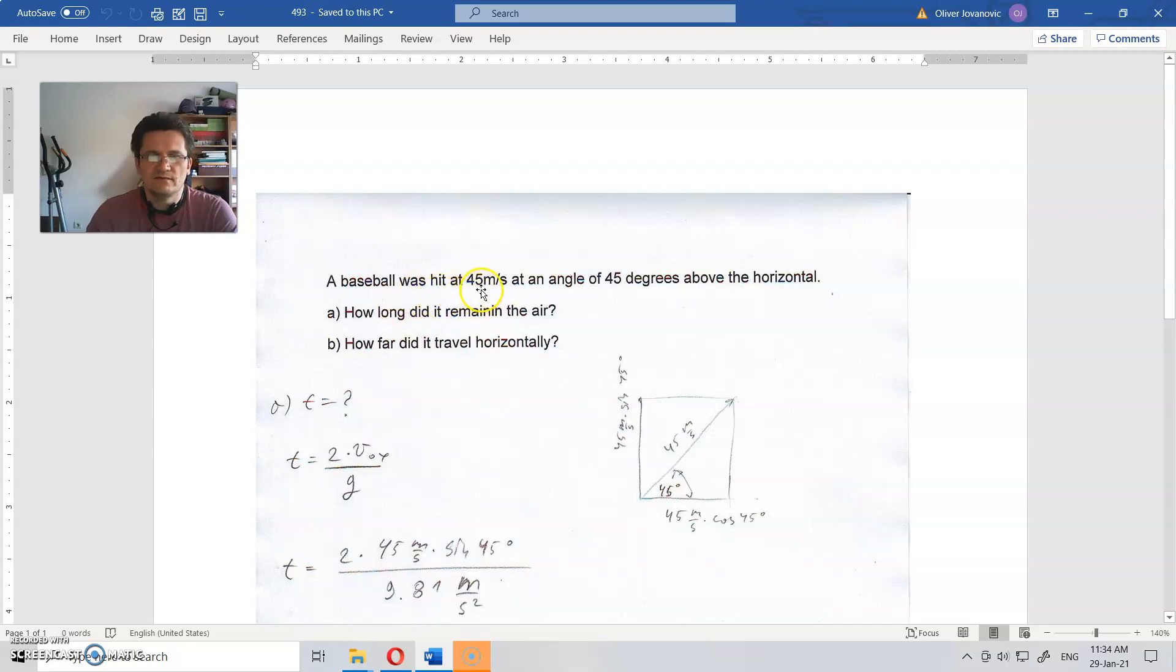A baseball was hit at 45 meters per second at an angle of 45 degrees above the horizontal. This is the angle and this is the magnitude. How long did it remain in the air, and how far did it travel horizontally?